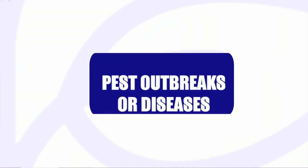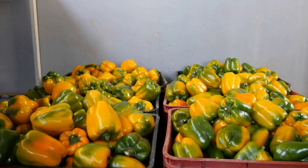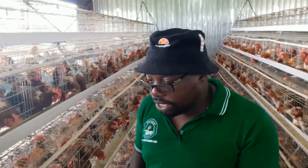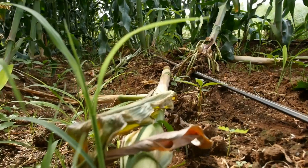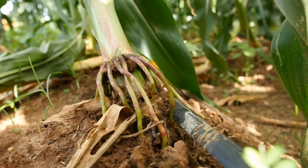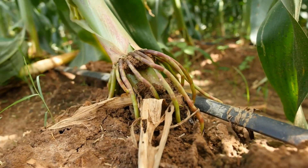The first risk example is pest outbreaks or diseases. From my 10 years of experience, especially in horticulture and poultry farming, pest infestation or disease is one of the killer punches in any farming enterprise. At the time of shooting this module, we had just been relieved from an onslaught of pests in one of our core crops, which is cucumber.